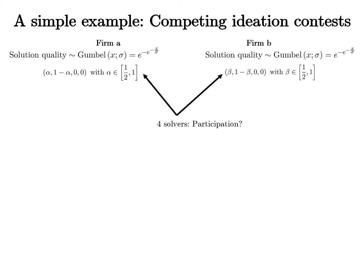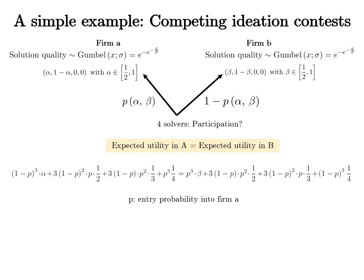For simplicity, assume that upon selecting a contest, the quality of the solution submitted by a participant is a random variable drawn from a Gumbel distribution. Consistent with past literature, we assume that the value received by the firms depends only on the best submission. Suppose that firm B chooses an arbitrary allocation with two rewards, whereas firm A offers two rewards: alpha and one minus alpha.